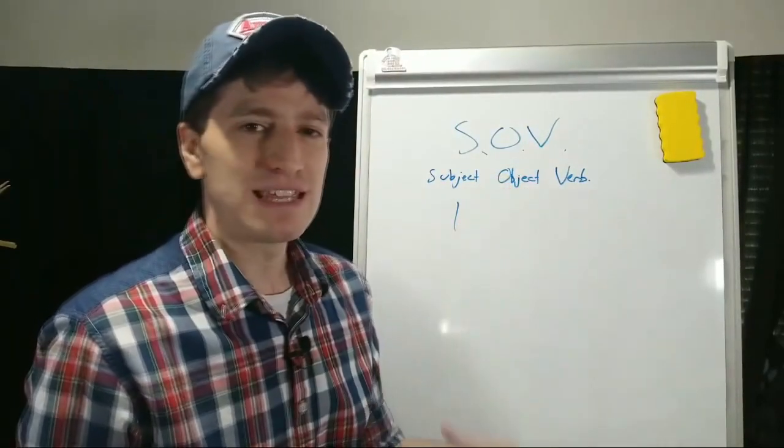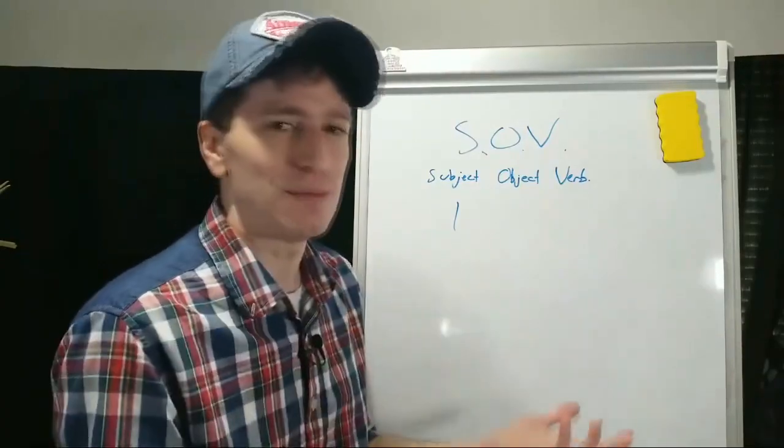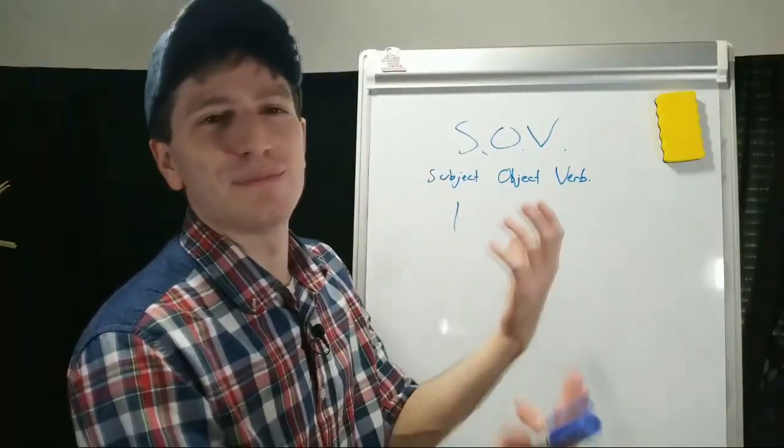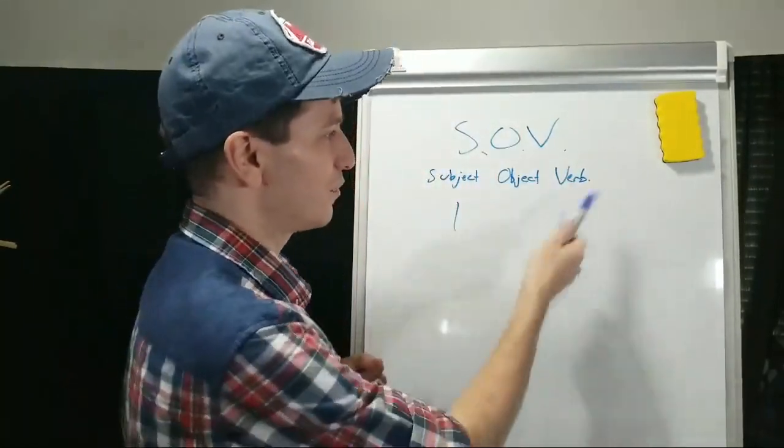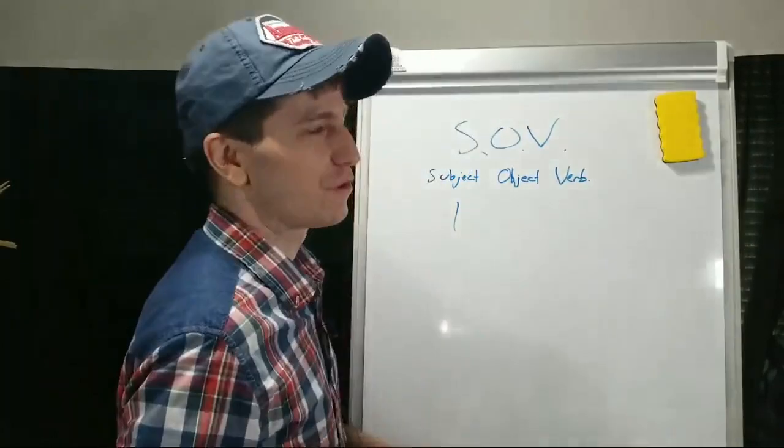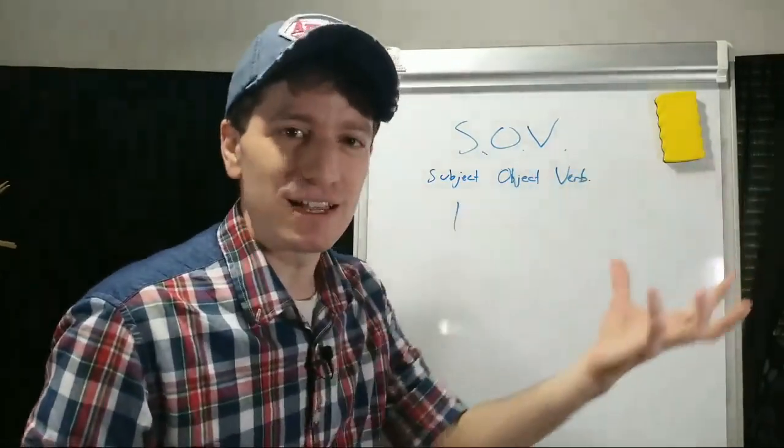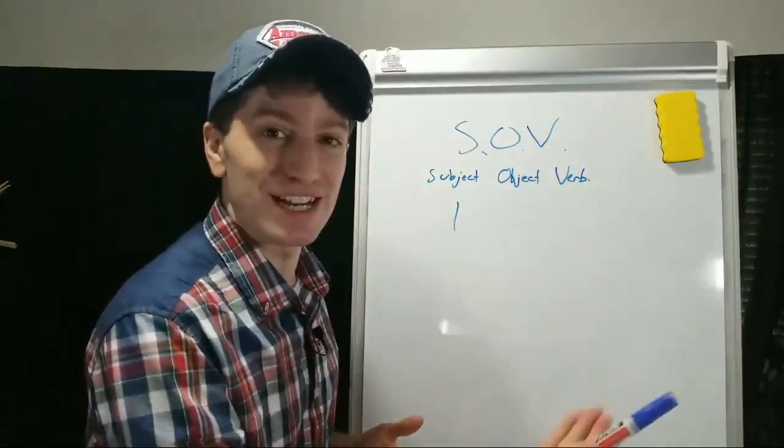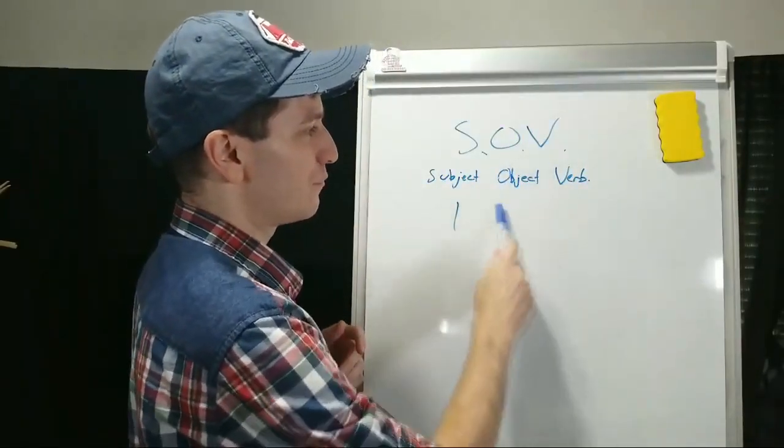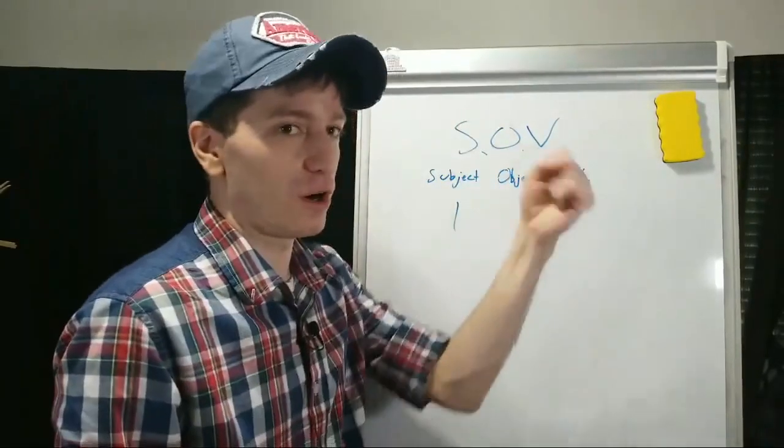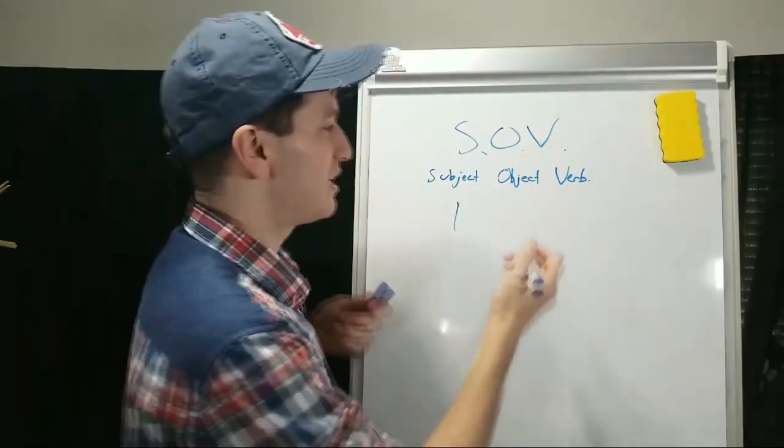An object is something that a verb - a verb is just to do, to eat, to go, to swim, to study, to sleep, to wonder, to worry, to think. All of those to do things are verbs. Anything that those verbs can affect, for example, to swim - can you swim something? No. But you can eat pizza, you can eat kimchi, you can drink water, you can study Korean. So all of those things that you can affect with a verb, you can close a window or open a door. All of those things, the door, window, pizza, kimchi, those would be an object.